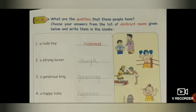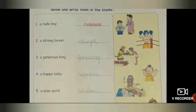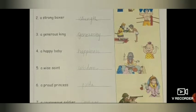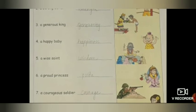Second is a strong boxer. Jo strong boxer hota hai, uski strength. Abstract noun kya ho jaegi? Strength — takat. Third is a generous king. Uski generosity. Abstract noun: generosity. Fourth is a happy baby. Khush baby hai, to uska abstract noun kya hoga? Happiness. Fifth is a wise saint. Abstract noun: wisdom — yaani gyaan. Saint yaani sadhu, sant.